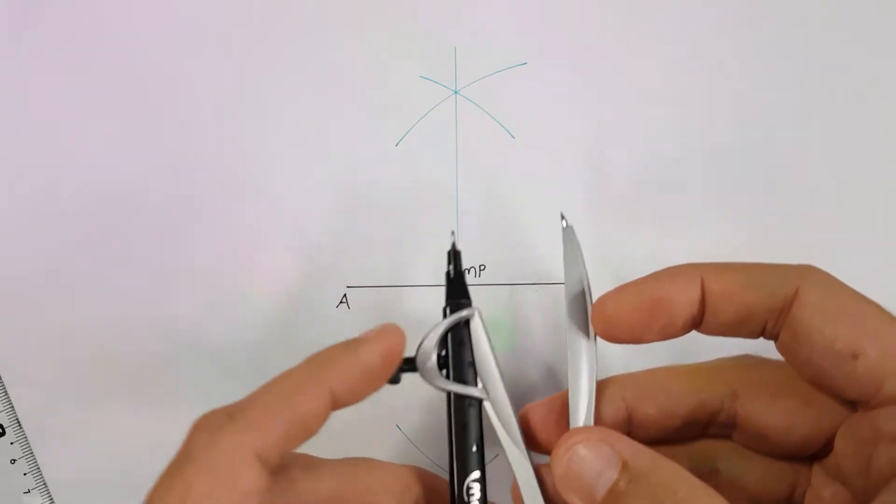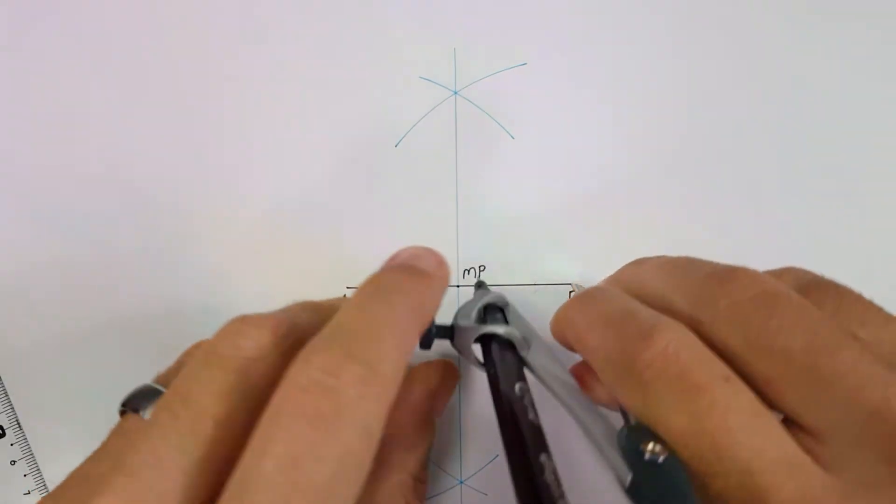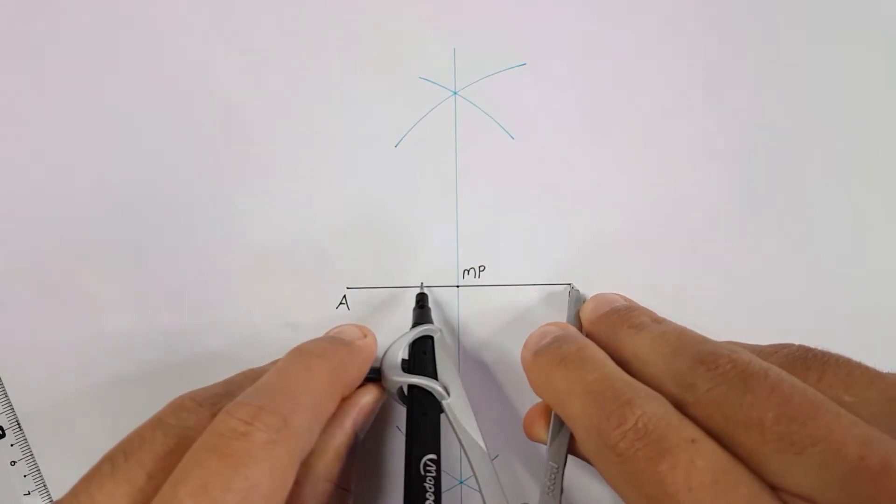If your compass is too small or the line might be a little bit too long, you can adjust your compass more than half the length of the line and apply the same method.